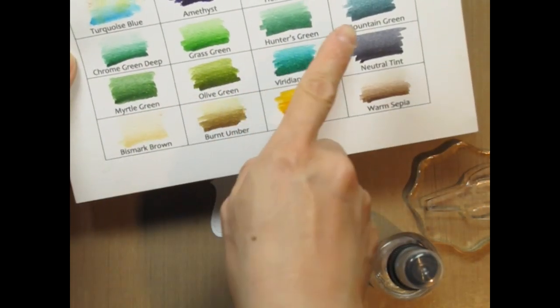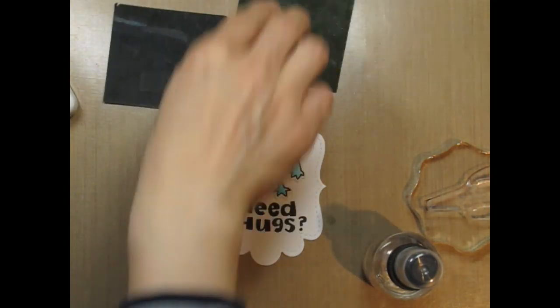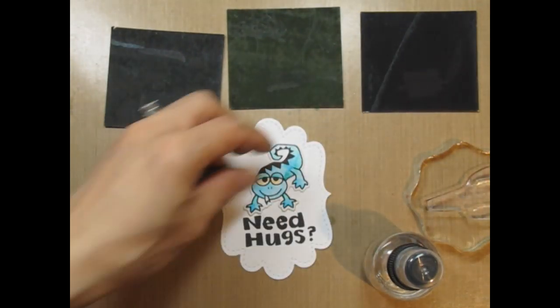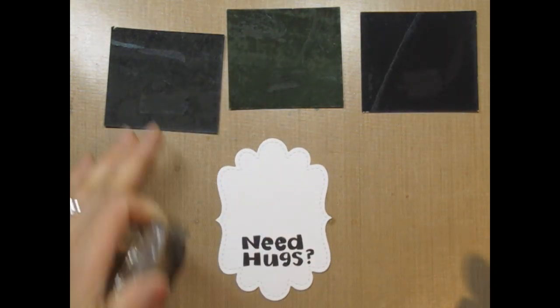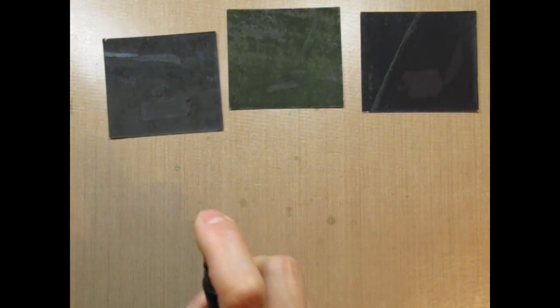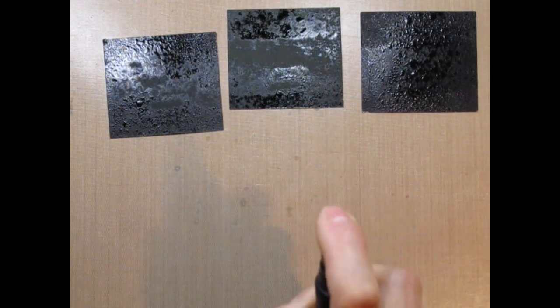I want to use Myrtle Green, Olive Green, and Mountain Green for the cacti, but whether that's possible remains to be seen. I take my Ranger Mister and spray the watercolor papers with water. I did not speed up the spraying and stamping time, so you can see just how quickly these sheets dry. It's really quite amazing actually.